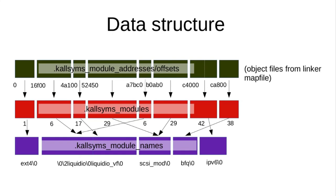I'd like to not have to build this by hand and be able to just ask the kernel what a given object file is part of — if it's part of a built-in module. But this is code that was probably written 20 years ago, no one understands it, and people are trying to tear it out.